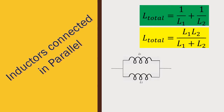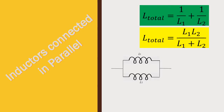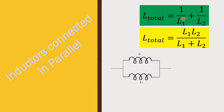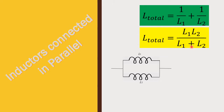Next, we are going to see inductors connected in parallel. When two inductors are connected in parallel, the total inductance is equal to 1 by L1 plus 1 by L2. That is, total inductance is equal to L1 L2 divided by L1 plus L2. This is similar to resistors connected in parallel.